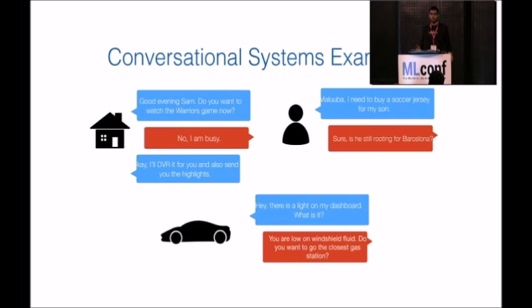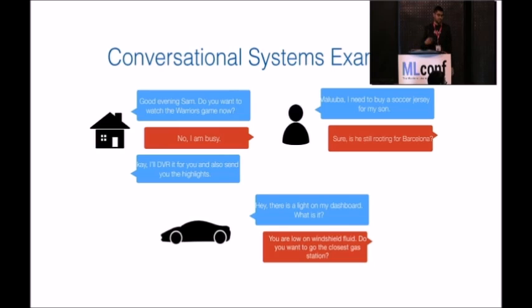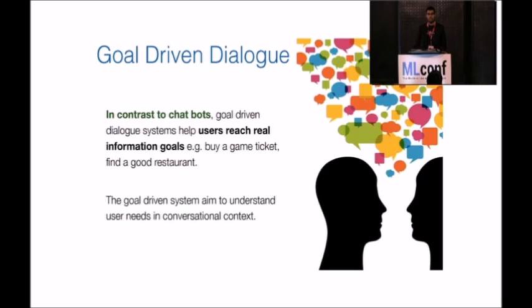Here are some examples. Many of you are probably familiar with the emergence of chatbots. The first one is an example of a smart home — the house saying good evening to Sam, recommending him to watch a game, and Sam saying he's busy, so the house decides to record. Other examples include an e-commerce application and the connected car. These are all examples of what we call goal-driven dialogues, where the machine's goal is to help the user achieve their information goals in the most optimal way — as opposed to chatbots, which are generally there to have a general conversation or to entertain.